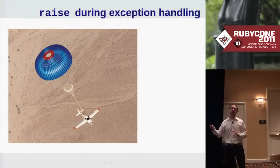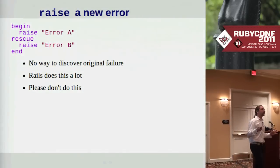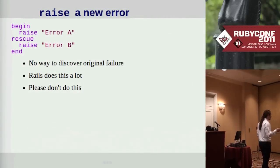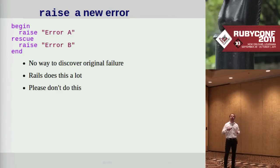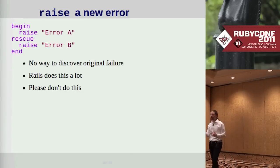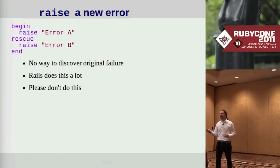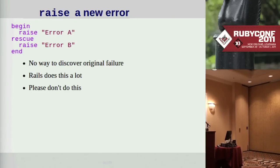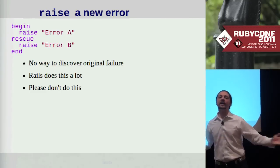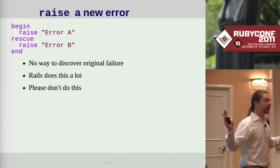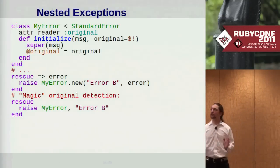What happens when we raise an exception while handling another exception? It depends on how raise is called. If you call it with a brand new message, it will substitute the new exception — the old one is thrown away, and there is no way to get a reference to the original exception. This tends to complicate debugging a lot, because you'll trace back to an exception and discover it was raised while handling another, and have no idea what that original exception was. So please avoid doing this — use nested exceptions instead.